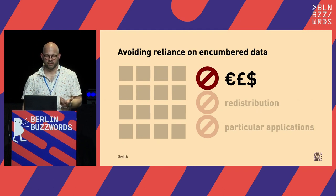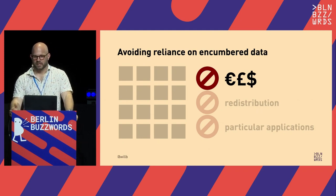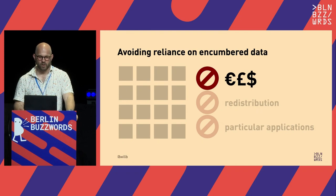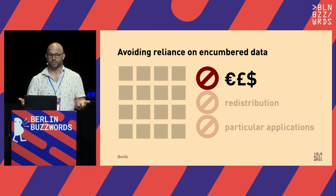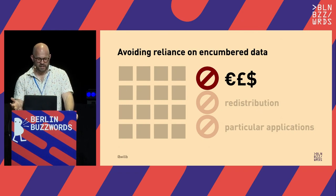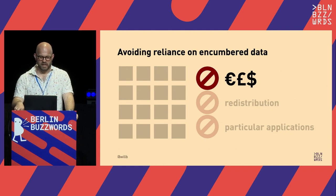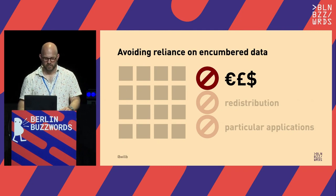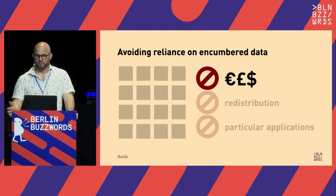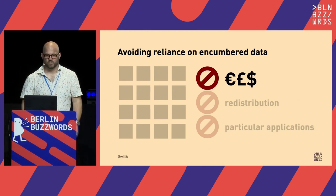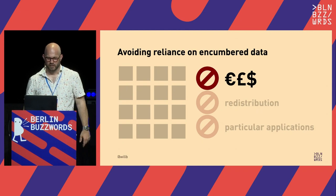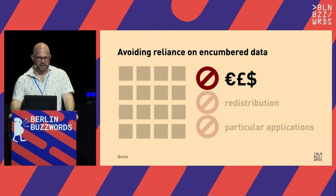A colleague and I were giving a workshop at a data science conference in the US where we wanted to use a media recommendation dataset to show a different way to do recommendations. The dataset said no commercial use, but we weren't being paid to present the tutorial — we were paid our salaries but the conference wasn't paying us. The tutorial itself was permissively licensed open source code depending only on permissively licensed open source code.